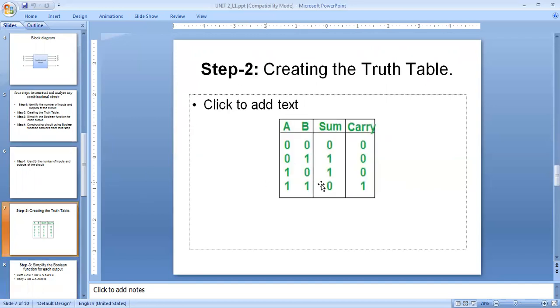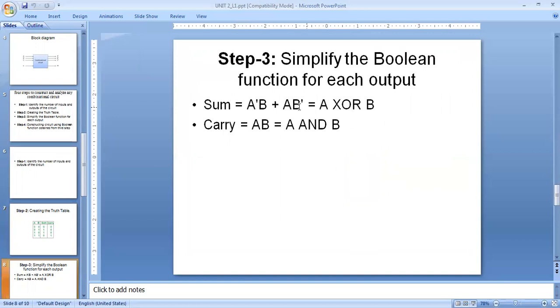We have the high state, that means sum will be obtained when at least we have one input should be high. Based upon this, the expression solved and we obtained it as A dash B plus A B dash, which is equal to A XOR B, which is the output of the sum, and carry we obtained as A B.